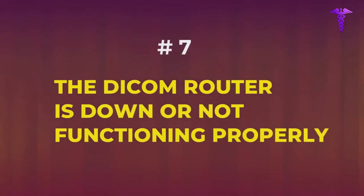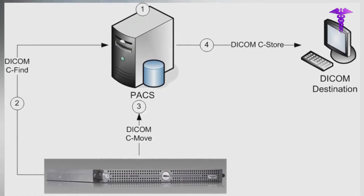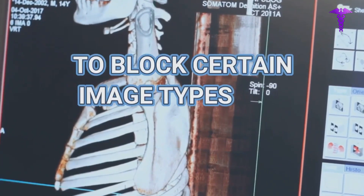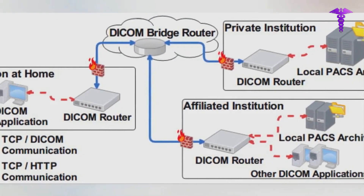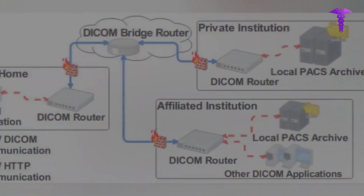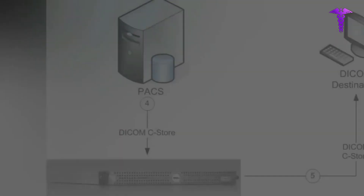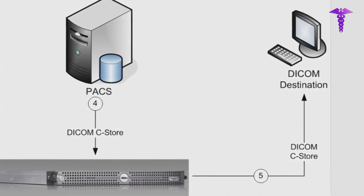Reason 7: The DICOM router is down and not functioning properly. Some organizations use a DICOM router between the modality and PACS for several reasons: to modify DICOM tags on transfer, to load balance, to block certain image types, or to send images to different destinations based on file type or metadata. Be sure the DICOM router is online, check for recent rule changes, and ensure new rules don't affect previous ones. Also confirm there's no connection issue between the router and PACS.